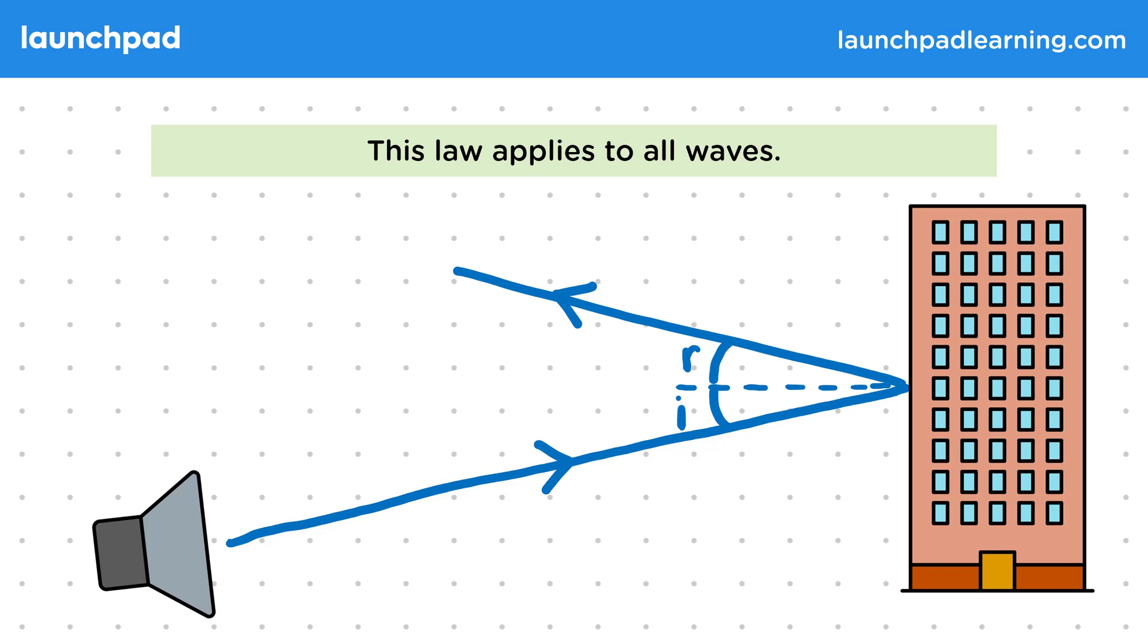It's because the sound wave doesn't act like a ray. It's not a thin straight line but a pattern that spreads out like this. So the wave hits the building at different points and is reflected in different directions, including back towards us.